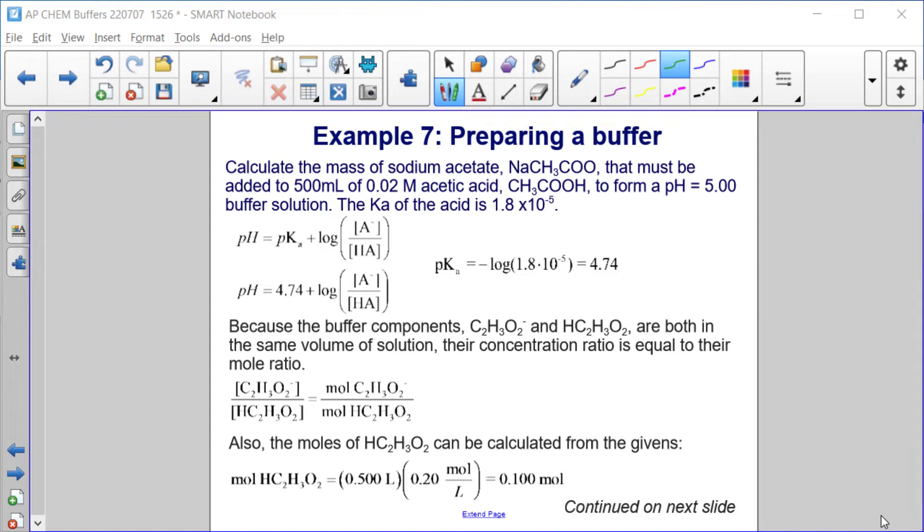Because the buffer components, acetate, which is the base, and acetic acid, which is the acid, are both in the same volume of solution, their concentration ratio is equal to their mole ratio. So, the ratio of the concentration of base over acid is also the ratio of the moles of base over moles of acid, and the moles of acid can be calculated from what we're given. It's a 500 milliliter or 0.5 liter solution times 0.02 molar or moles per liter means 0.100 moles of acetic acid.